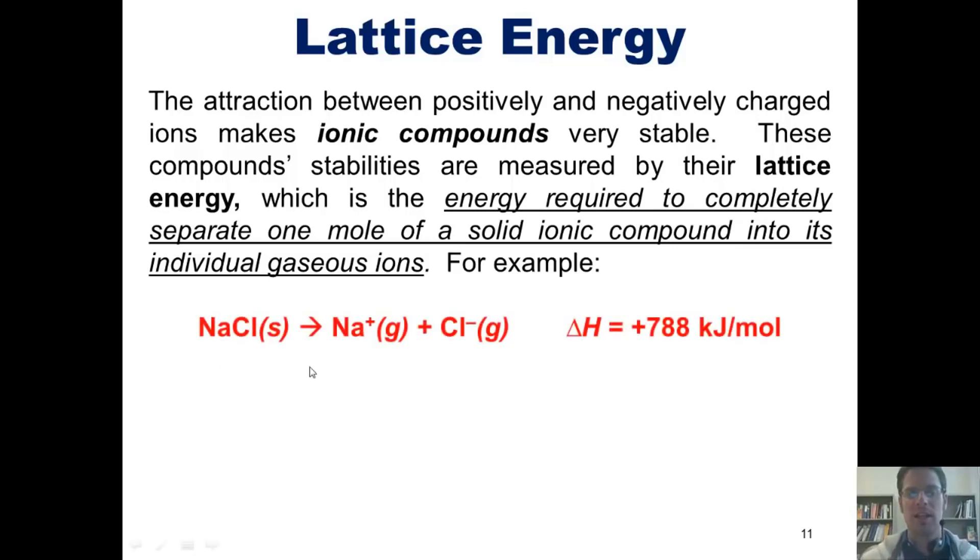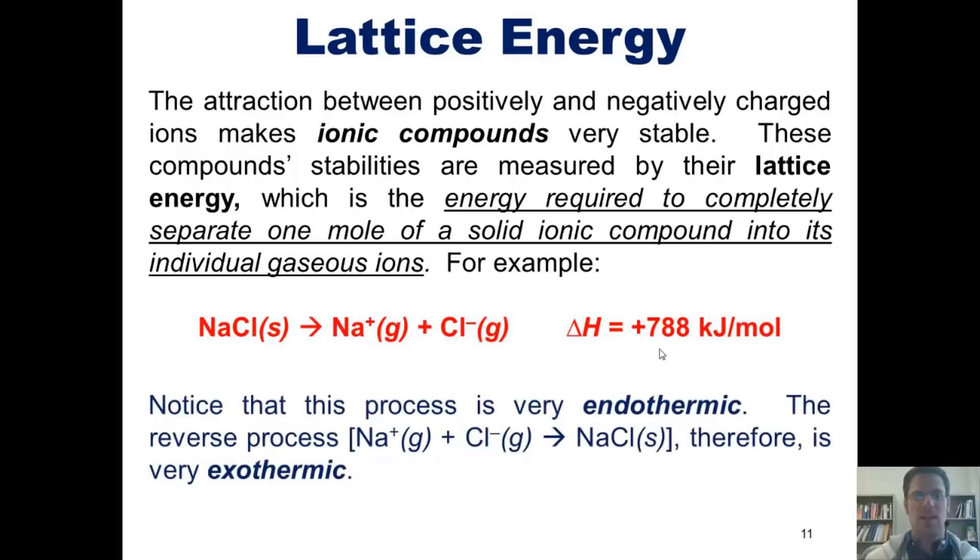For example, if you take sodium chloride solid and separate out all of the sodium cations from all the chloride anions, and then in that process vaporize them to a gaseous form, the total amount of energy required is 788 kilojoules per mole of sodium chloride. Now you should notice that this process is extremely endothermic. What this means is that rather than giving off heat, this process requires a tremendous amount of heat put into it. That also means that the reverse process combining sodium cation and chloride anions to form sodium chloride solid will be very exothermic by the exact same amount in reverse.